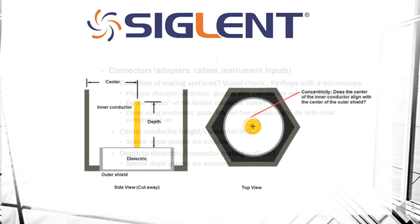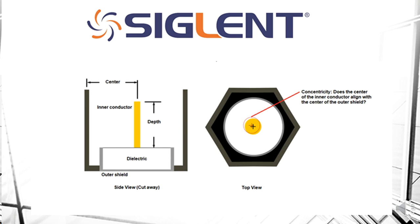We can also take a look at the center conductor height and concentricity of our connectors. There are special gauges available for that. And then there's the depth of dielectric and connector mating surfaces again also available with some special depth gauges. We're not going to go into detail of that but I did want to bring it up because it is very important.